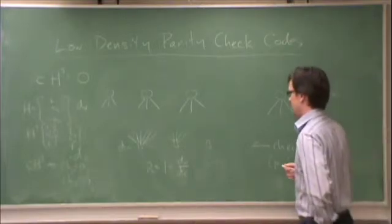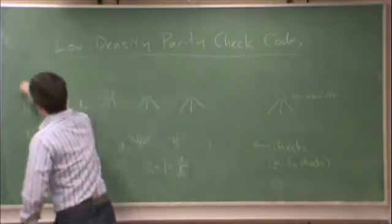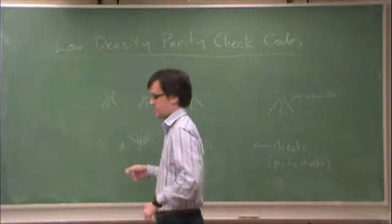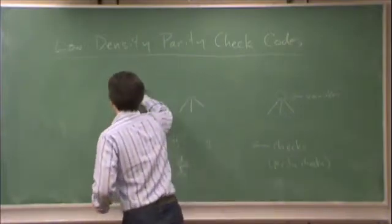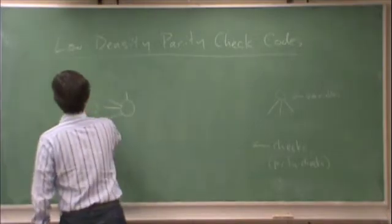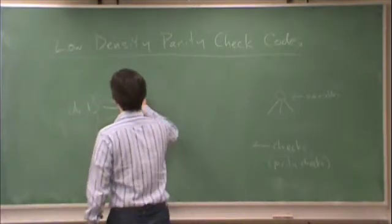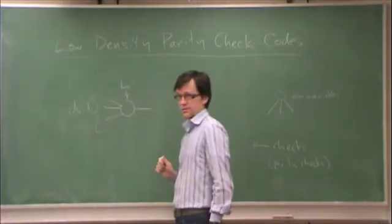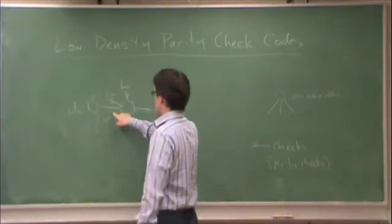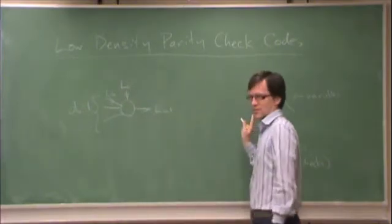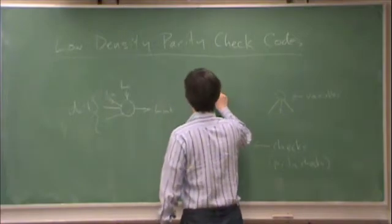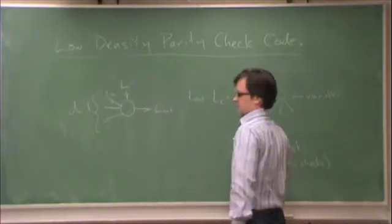Last time we went into considerable detail talking about how to calculate messages. We decode this code by calculating messages locally at every node and then passing the messages along the edges. At a variable, I have dv minus one inputs, one output, and this represents the channel message. These are input messages from the graph, that's an input message from the channel, and that's the output message back to the graph. L out is equal to Lc plus the sum of the input messages, where all of these are expressed as log likelihood ratios.